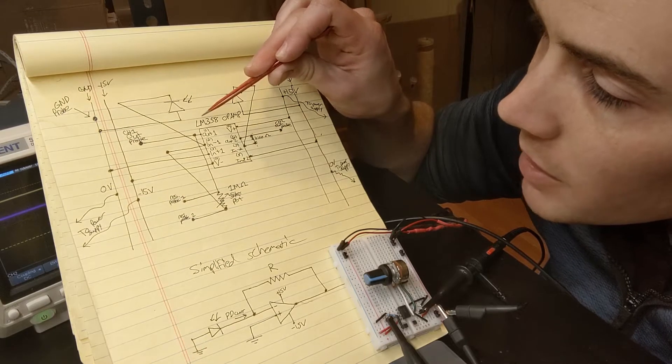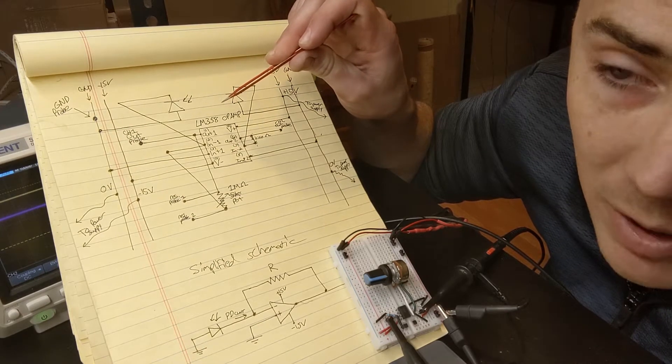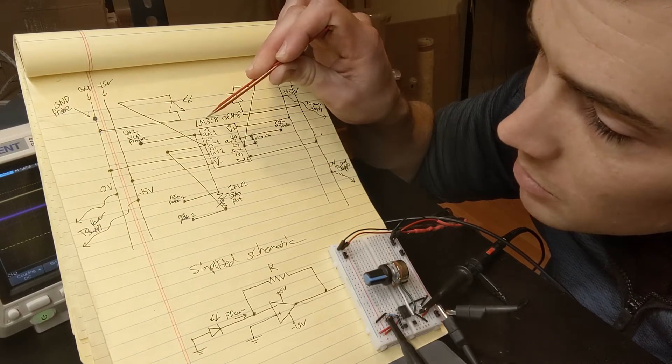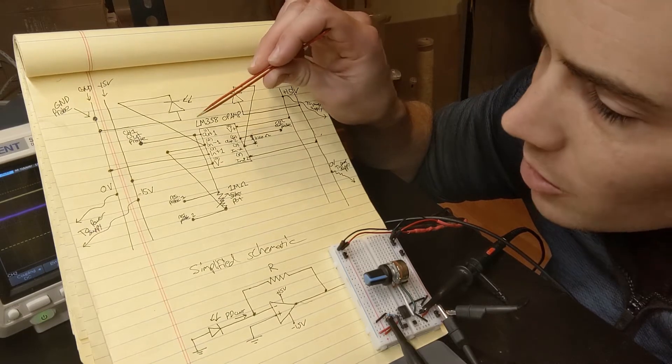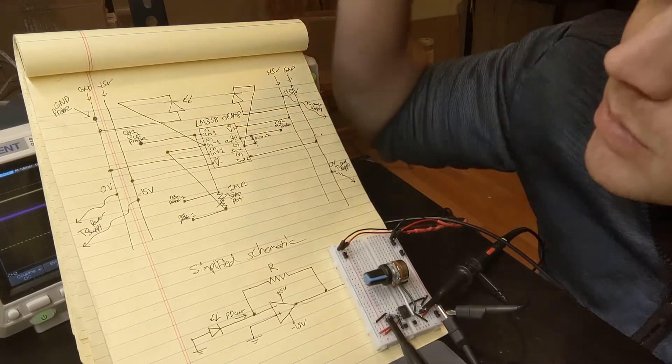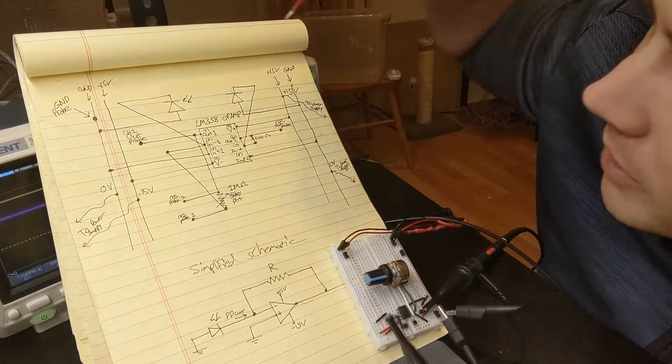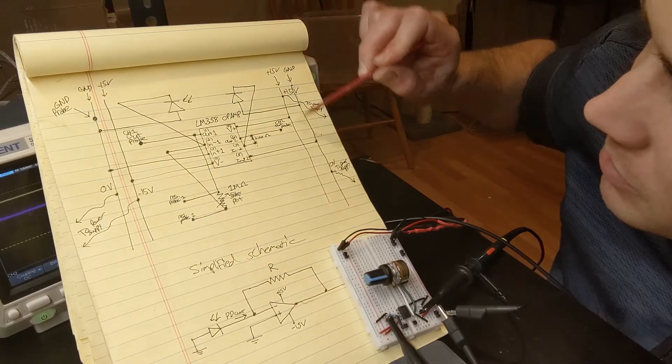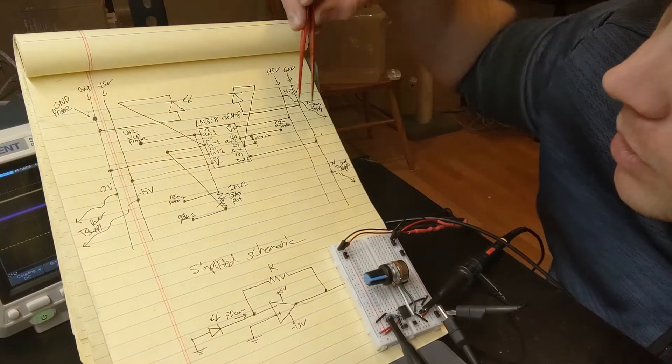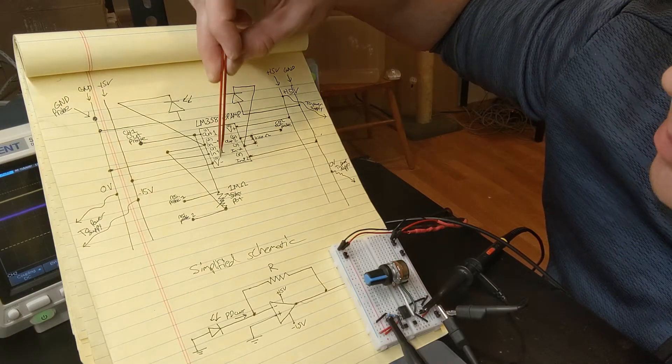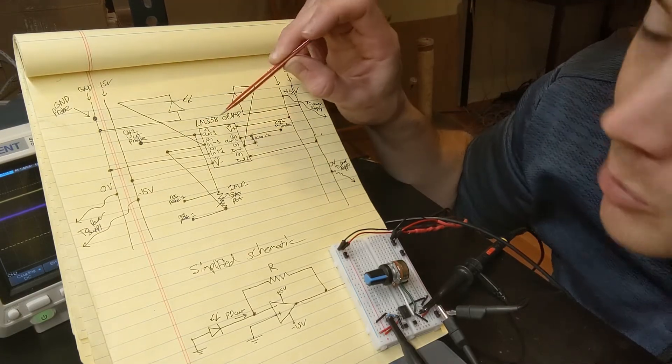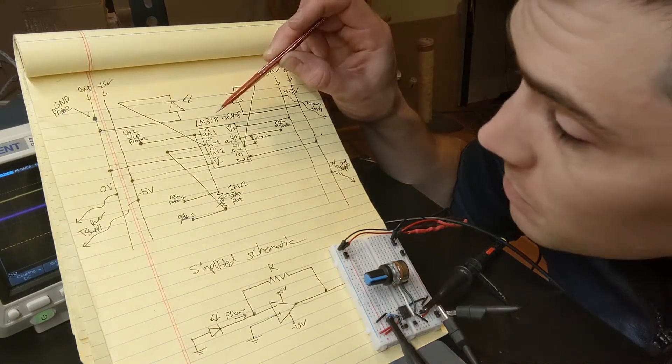So like I said, the op amp I'm using is an LM358, made by Texas Instruments. It's very cheap, I think it's a dollar or less. Got minus 15 volts along this rail, ground along this rail, ground along this rail, and a positive 15 volts there. So on the LM358, this is the pin out here. The LM358 has two op amps in it.